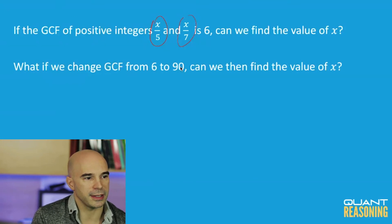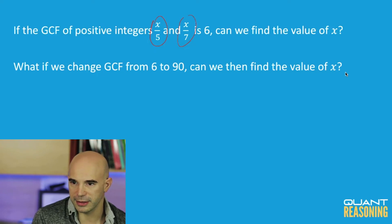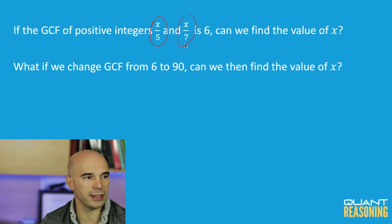And the second question, very similar, what if the GCF is actually 90? Then can we find the value of x? It sounded to me like the three of you all agree with each other that we can tell for sure that x is 5 times 7 times 90 for the same reason that in the previous question we said it would be 5 times 7 times 6. Now it'll be 5 times 7 times 90. In other words, it doesn't actually matter what the GCF is. Whatever the GCF is, you multiply that by these numbers and you get the answer.